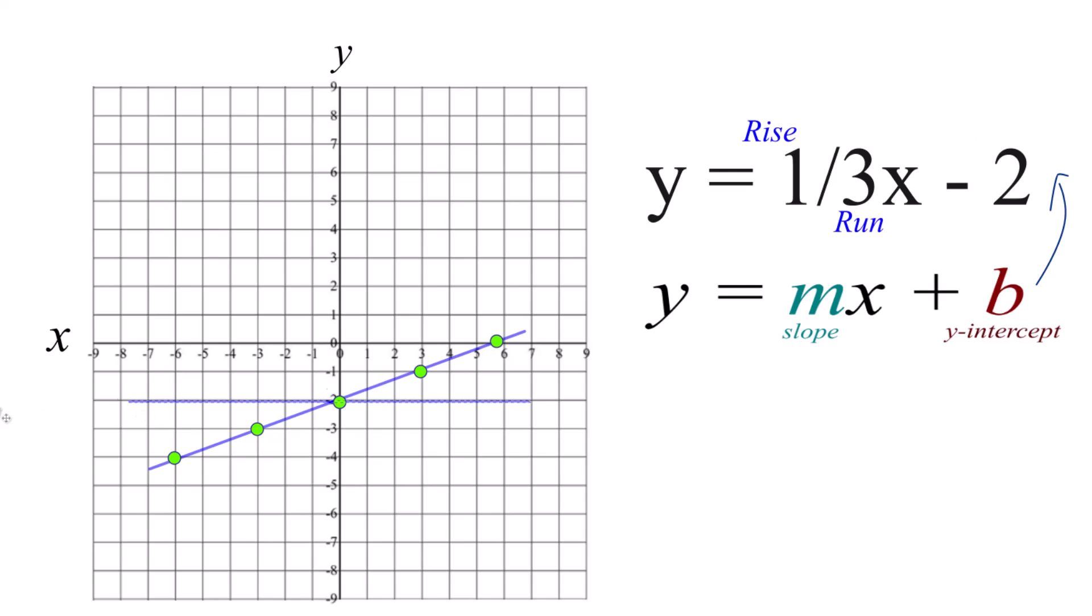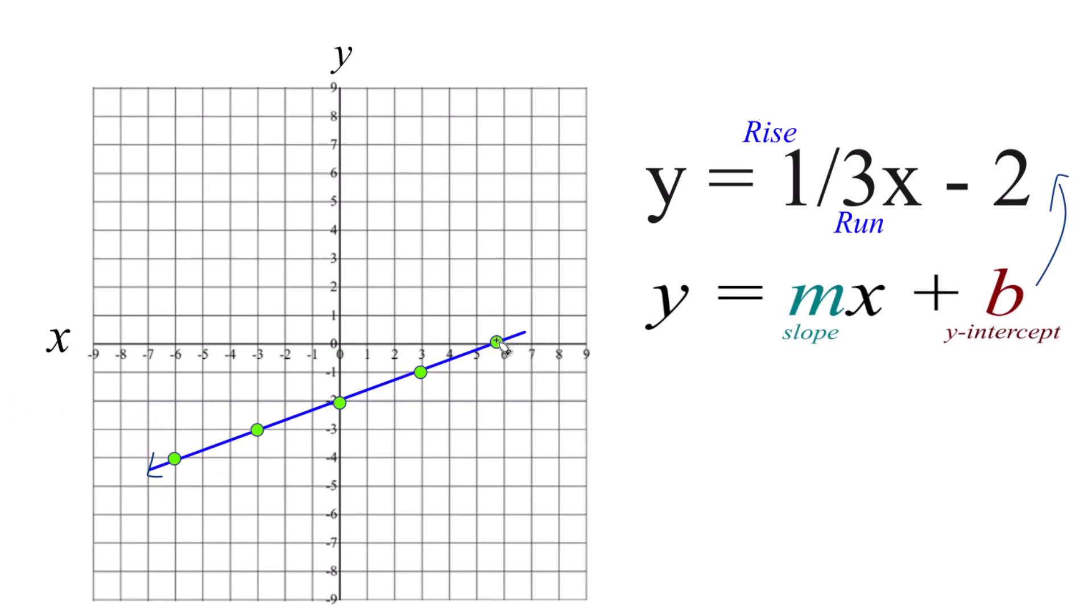Let's put a line through this. I'm going to put arrows to show this goes to infinity. That's the line, the graph, for y equals 1 third x minus 2.